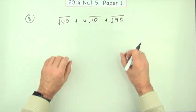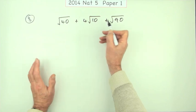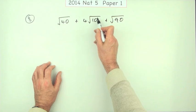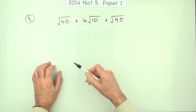If you're adding them, they have to be the same. Well, the clue's here. Root 10 is a number you think must be able to simplify because that's quite a big number, but there's no perfect square that will divide into 10.